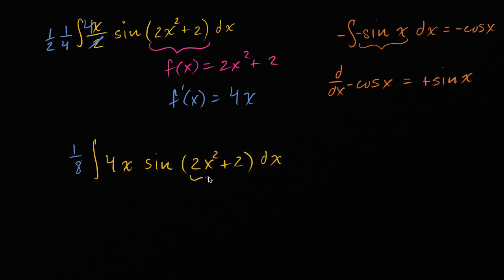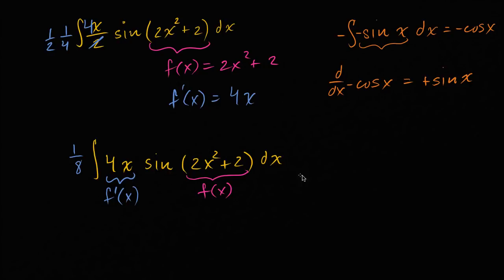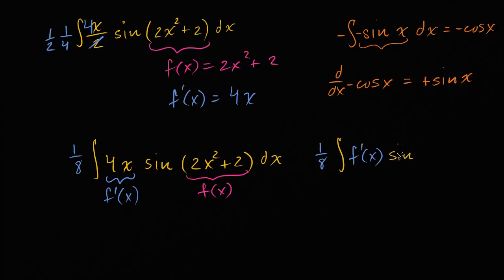Now this is interesting, because if two x squared plus two is f of x, then we're essentially taking sine of f of x, and this business right over here — four x — is f prime of x. That's a good signal that the reverse chain rule is applicable here. We can rewrite this as one eighth times the integral of f prime of x times sine of f of x dx.